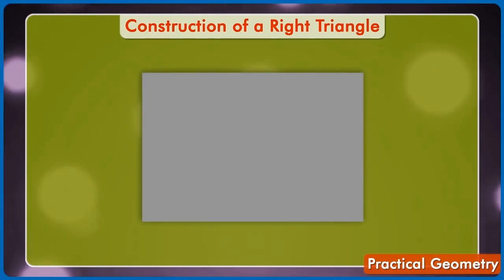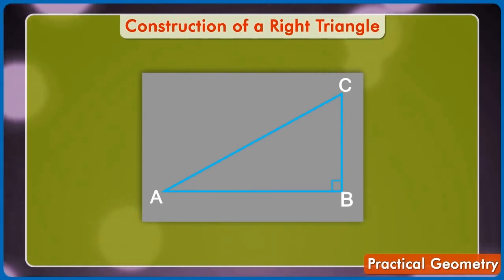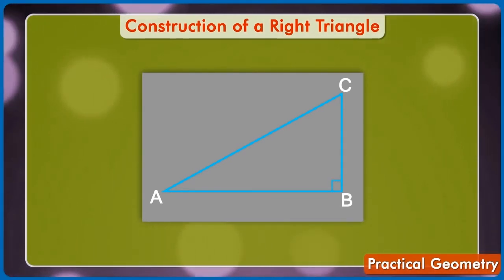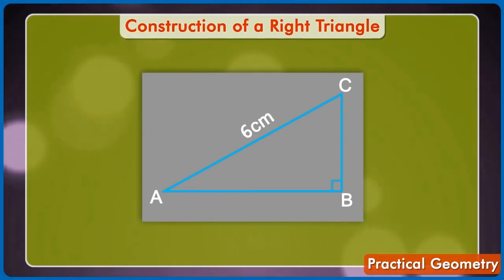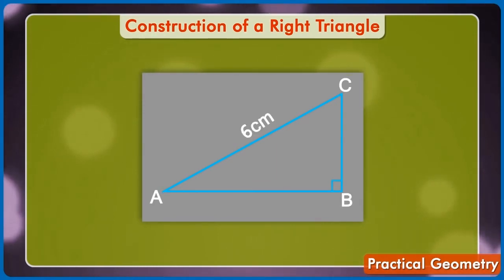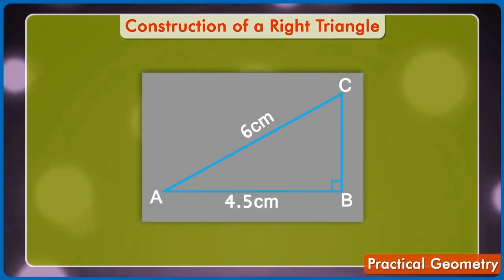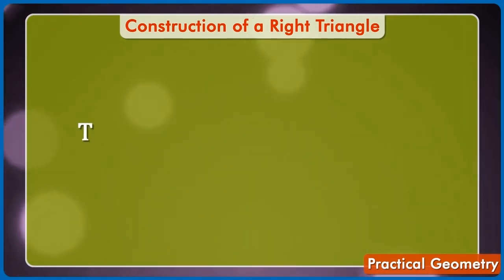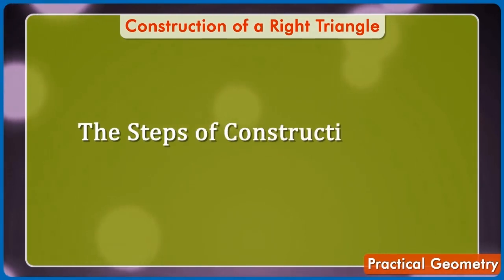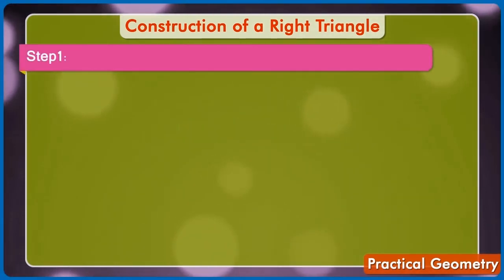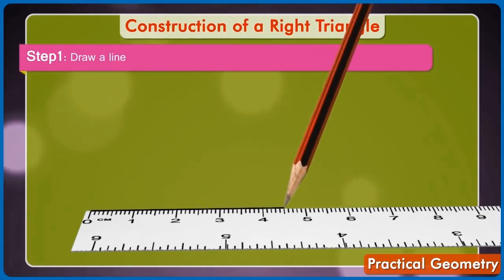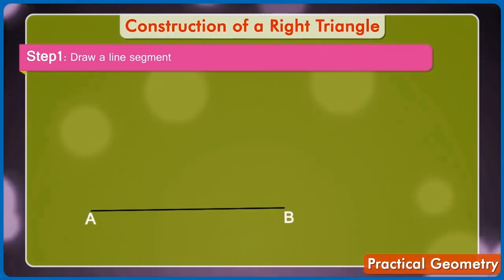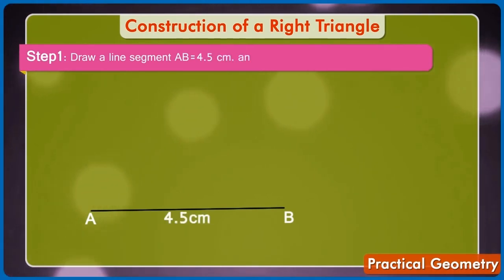Construct a right triangle ABC right angle at B in which side AC is equal to 6 cm and AB is equal to 4.5 cm. The steps of construction are Step 1: Draw a line segment AB is equal to 4.5 cm.